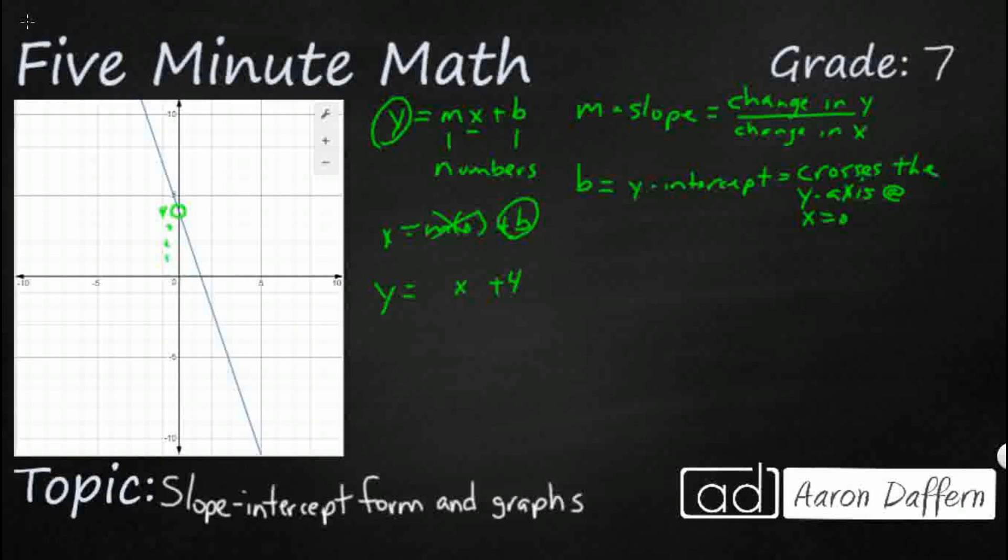Now we just need to figure out what our slope is. So remember, our slope is change in y over change in x. So let's go ahead and start with, we've got this right here. We've got that 4. So let's call that 0, 4. Let's find another spot where it's going to line up perfectly because some of these don't necessarily line up with an x-coordinate perfectly, but that one does.